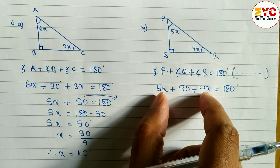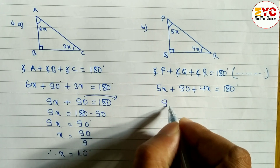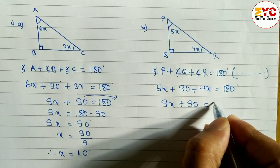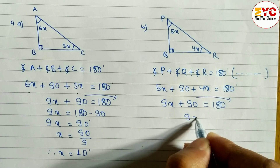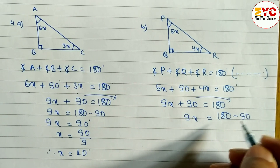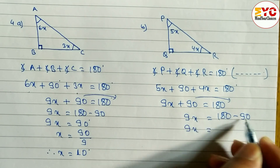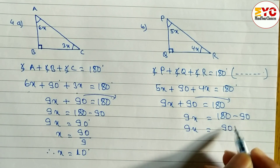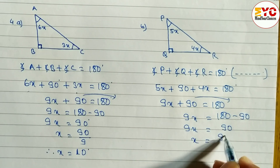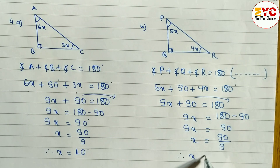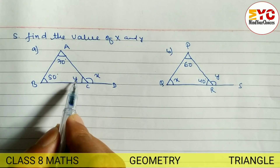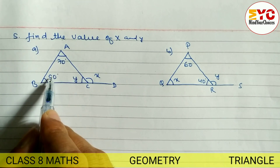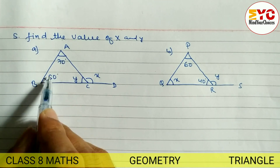5x plus 4x — these two are like terms so we add them to get 9x. Plus 90 is equal to 180. These two are unlike terms so we take 90 to the right side: 9x is equal to 180 minus 90, which gives 9x equal to 90. We divide: X is equal to 90 divided by 9, therefore X is equal to 10 degrees.